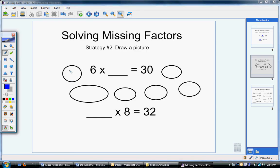So one, two, three, four, five, six, seven, eight, nine, ten, eleven, twelve, thirteen, fourteen, fifteen, sixteen, seventeen, eighteen, twenty, twenty-one, twenty-two, twenty-three, twenty-four, twenty-five, twenty-six, twenty-seven, twenty-eight, twenty-nine, thirty. I got to my product of thirty, and each circle has five tallies in it. So I know that six times five is going to equal thirty.